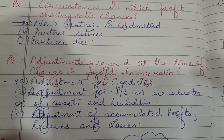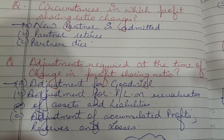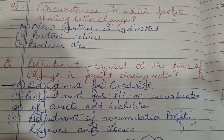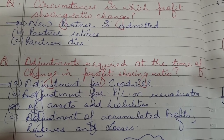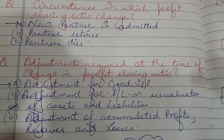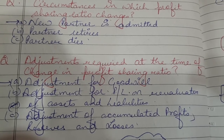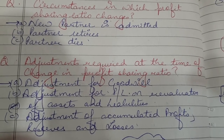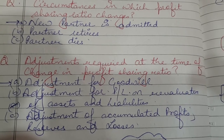When the profit sharing ratio changes, the following adjustments are required: adjustment for goodwill, adjustment for profit and loss on revaluation of assets and liabilities, and adjustment of accumulated profits, reserves, and losses.